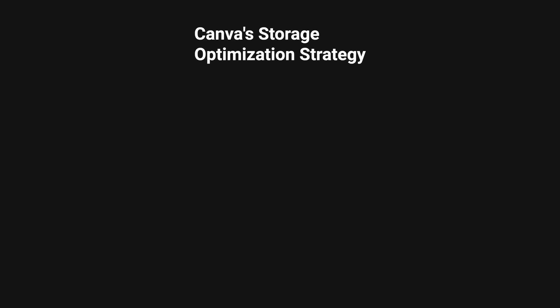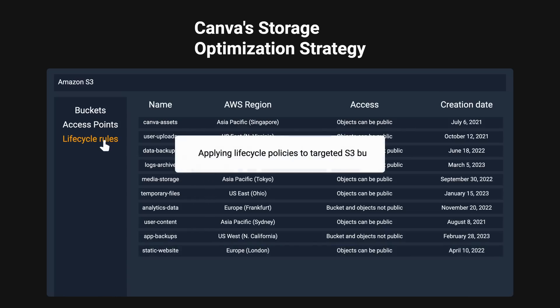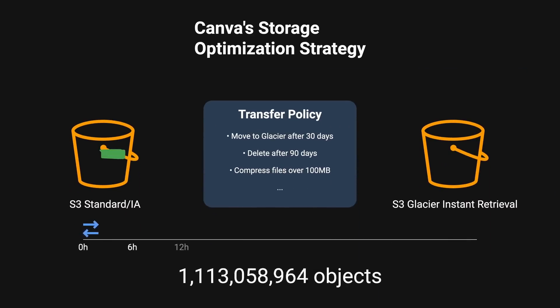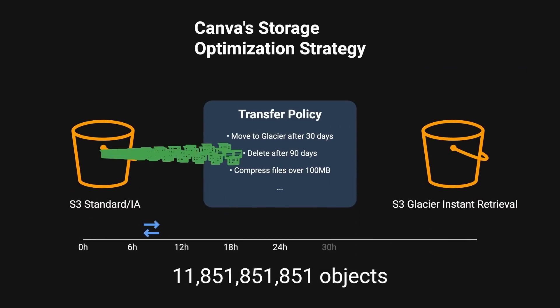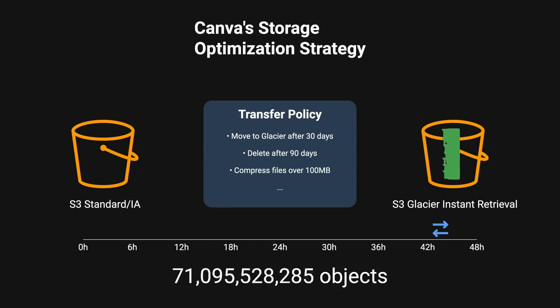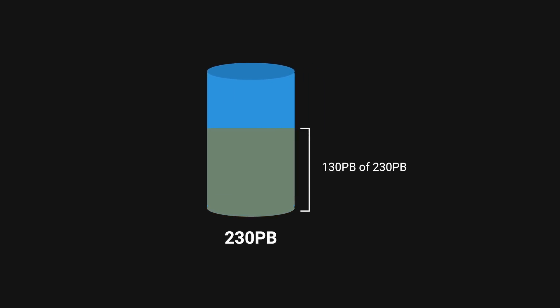Canva's implementation of their storage optimization strategy was straightforward. They applied lifecycle policies to the targeted S3 buckets, which automatically migrated objects to S3 Glacier Instant Retrieval based on predefined rules. This process was highly efficient, with Canva successfully migrating nearly 80 billion objects in approximately 2 days. After their migration, approximately 130 petabytes out of their 230 petabytes of data now resides in S3 Glacier Instant Retrieval.